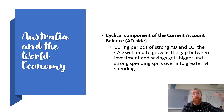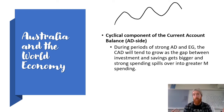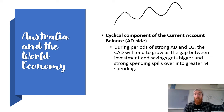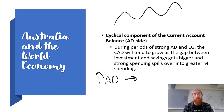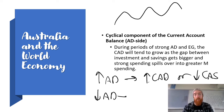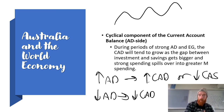Cyclical components relate to how fluctuations in aggregate demand — via the business cycle — impact the current account. During periods of strong aggregate demand and economic growth, the current account deficit tends to grow because the gap between investment and savings gets bigger, and strong spending spills over into greater import spending. Conversely, when aggregate demand is falling, people tend to save rather than invest, and they buy fewer imports, which is likely to decrease the current account deficit or increase a current account surplus.